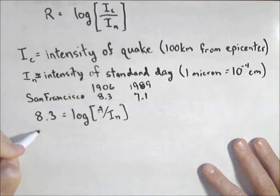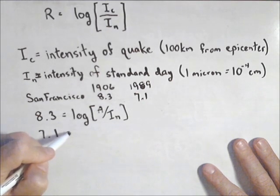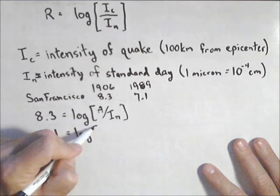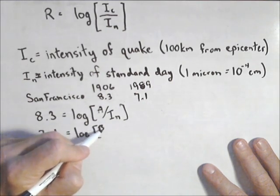And now let's make one for 1989. So 7.1 equals log, and we'll call the intensity in 1989 B.